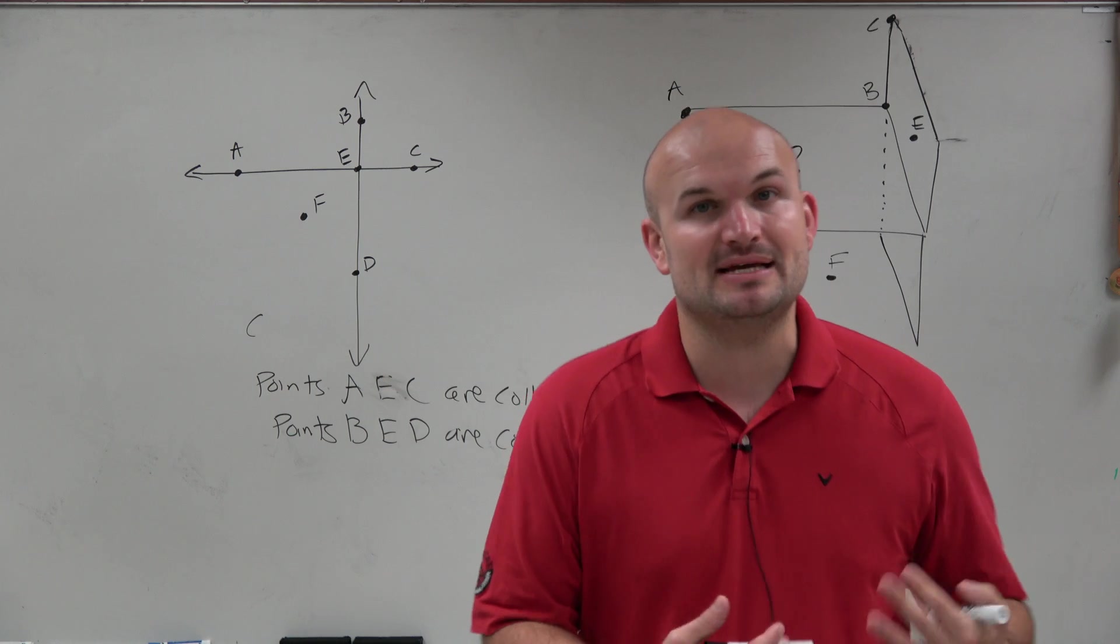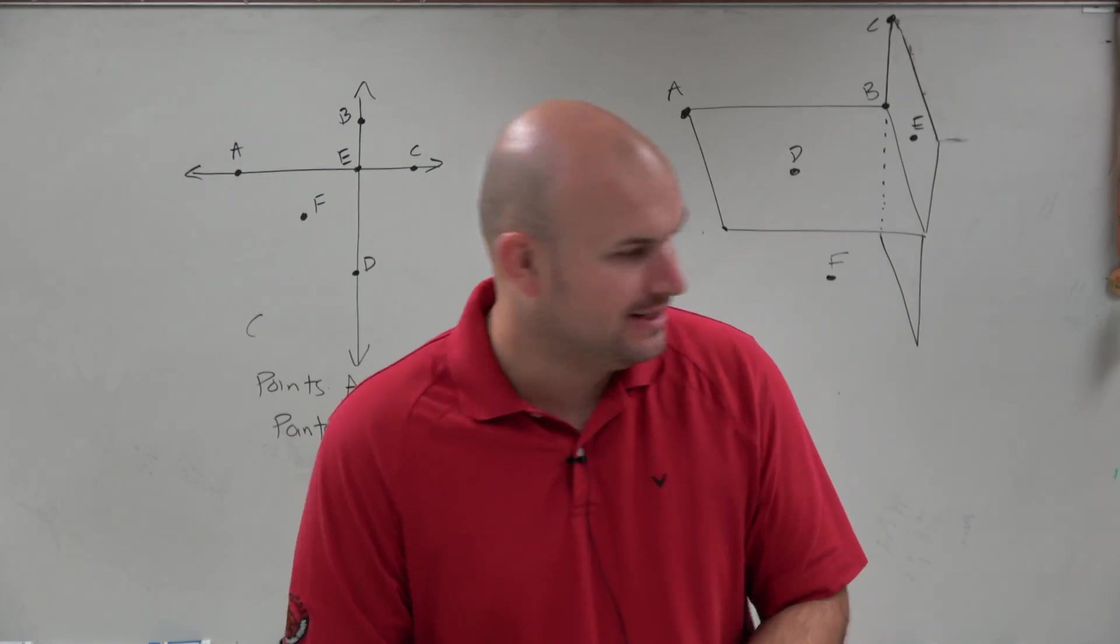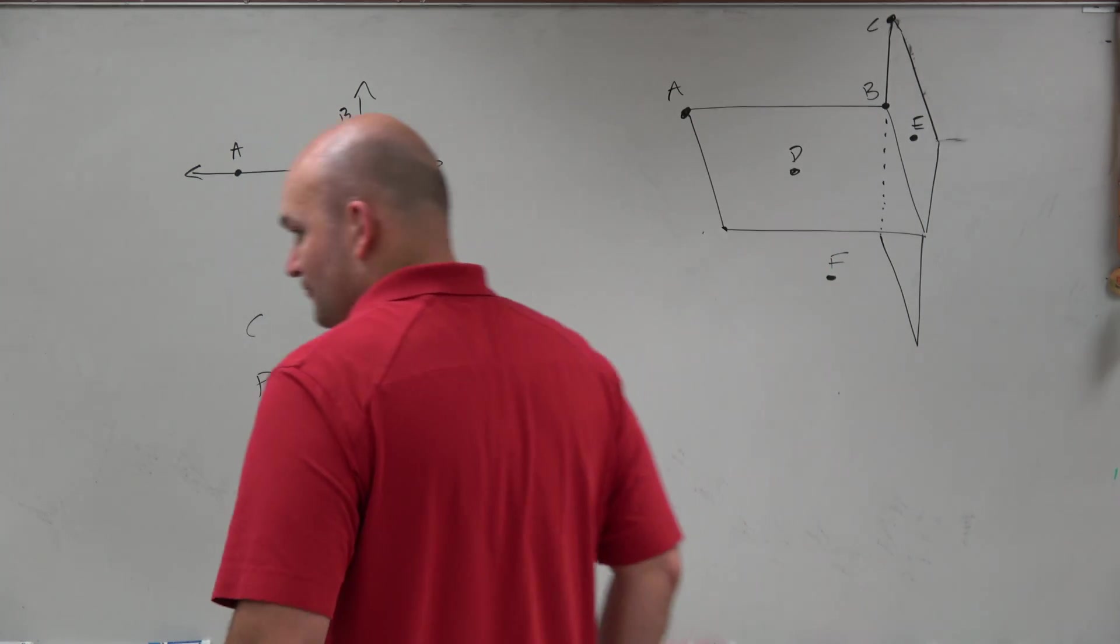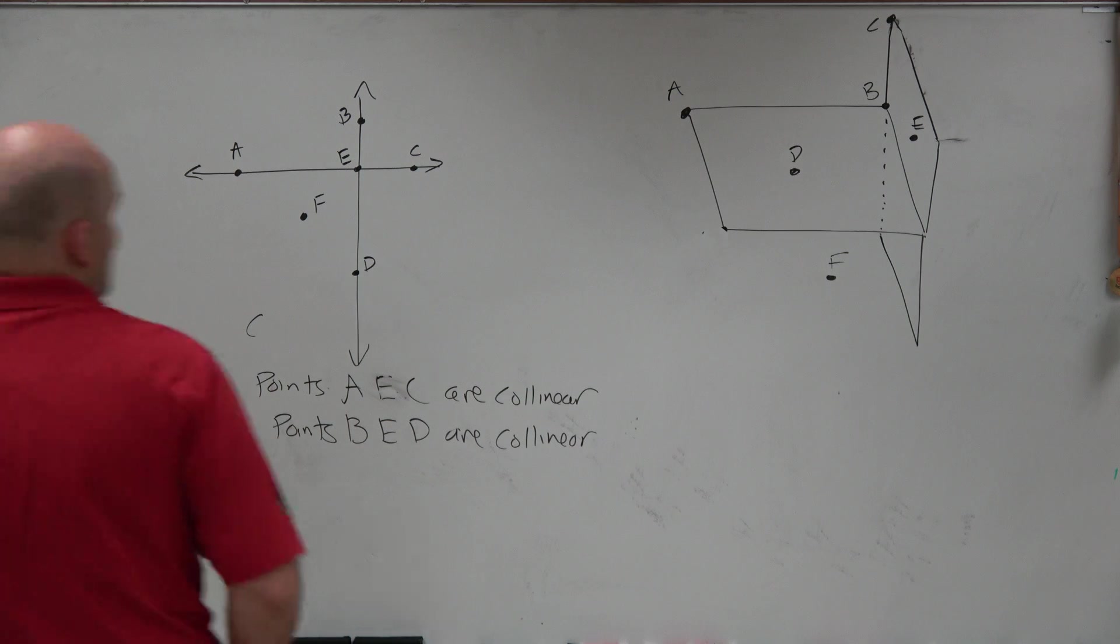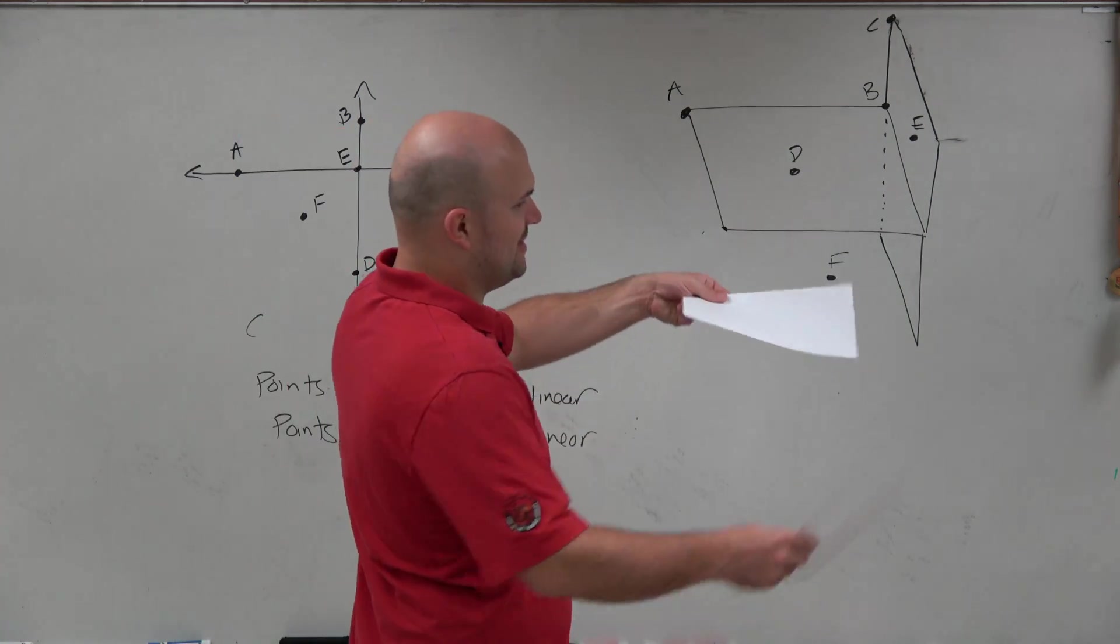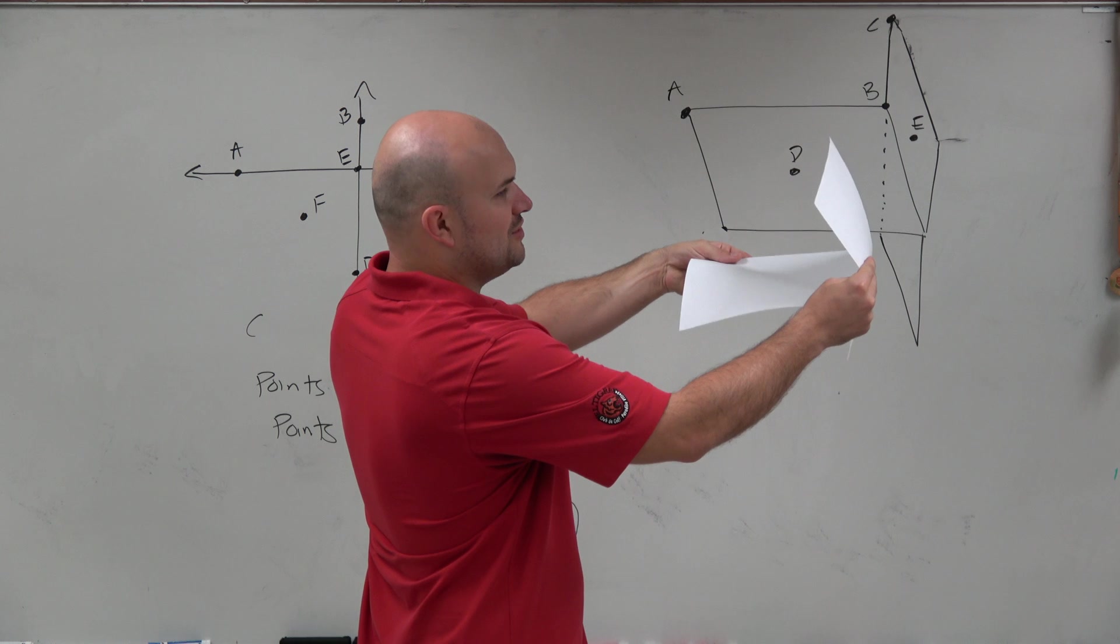All right, so coplanar is going to be the same thing. It's just points that lie on the same plane. Now, I tried to do my best here for you. Basically, I'm trying to represent a piece of paper going this way and then a piece of paper going that way. So they do intersect.